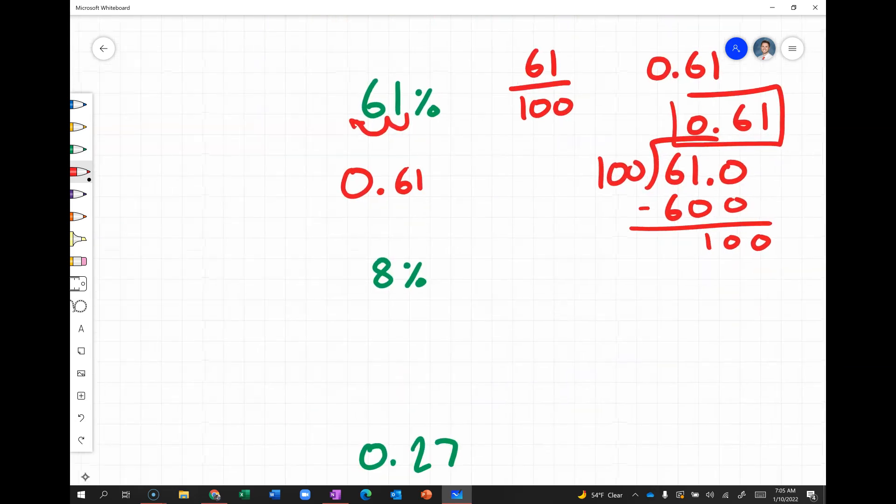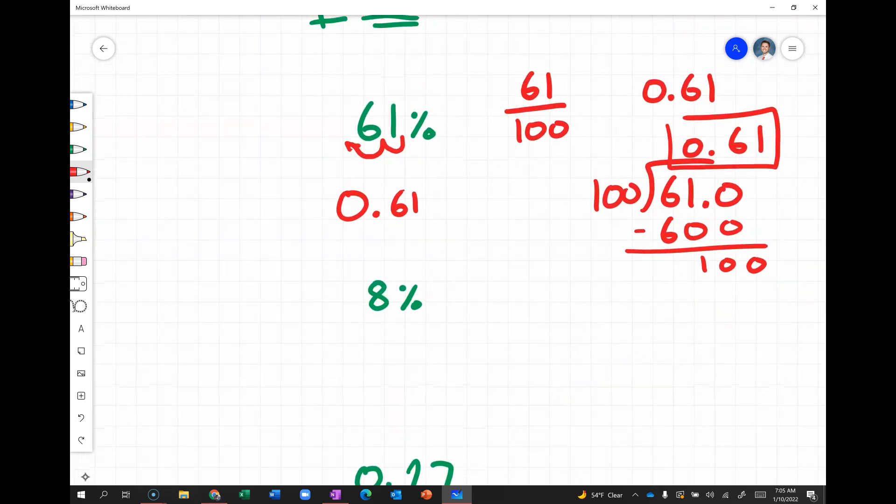So, you'd have 61.0. You move that decimal twice to the left and get 0.61. So, looking at another example, we have 8%. So that's 8 divided by 100. 100 goes into 8 zero times. 100 goes into 80 zero times. And 100 goes into 800 eight times, giving us 0.08. Again, if you were to use a decimal point, you move that two times, giving you 0.08.